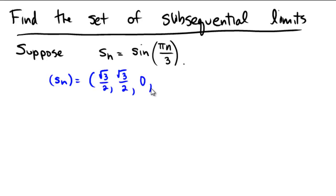Let n equal 4, we're going to be down in quadrant 3 now, so we'll get negative radical 3 over 2. 5 pi over 3 would give negative radical 3 over 2.